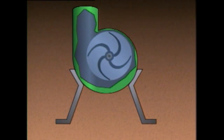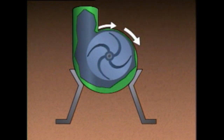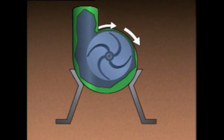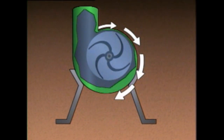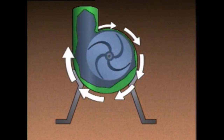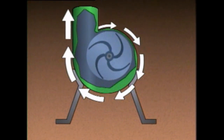As the liquid flows away from the impeller, it spreads out to fill the volute. The expansion in the volute causes the liquid to slow down and its pressure to increase. The increased pressure moves the liquid through the discharge of the pump and then on through the piping systems of the process.